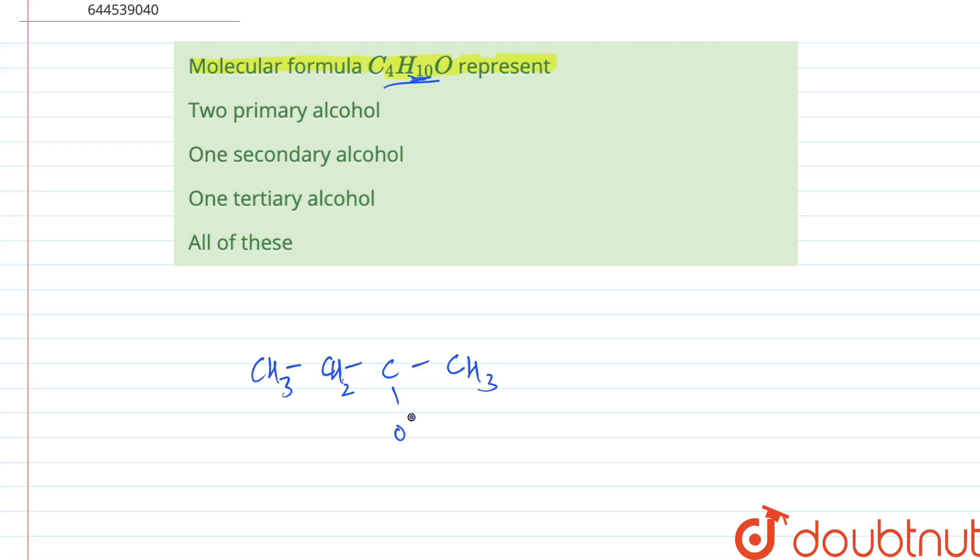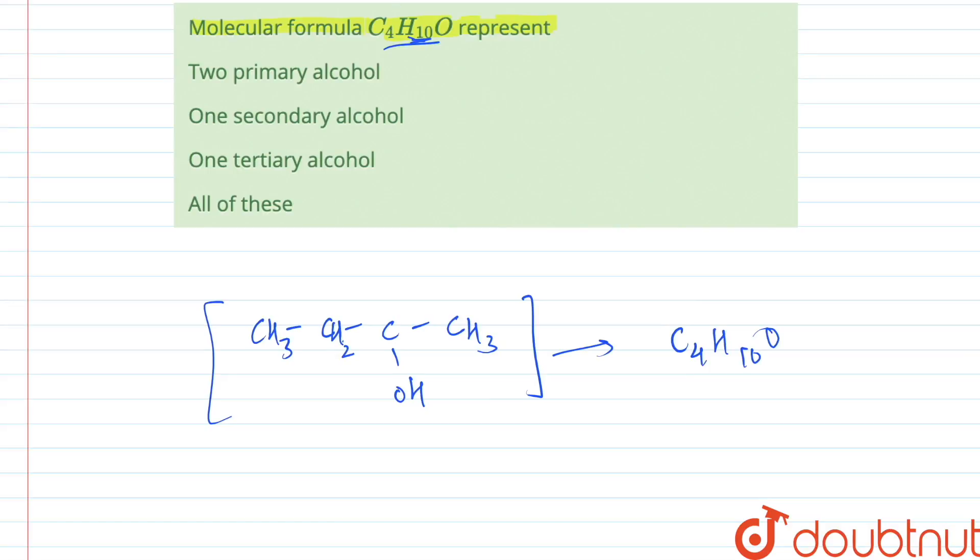This is what would be the molecular formula for C4H10O. And here we can clearly see that this OH group is attached to this carbon which is attached to two carbons.